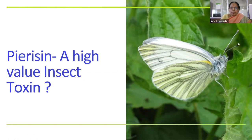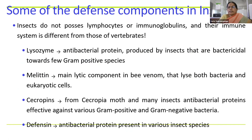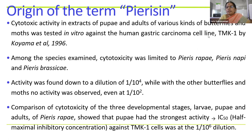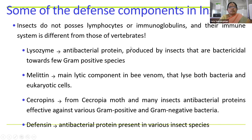It is obtained from the white cabbage butterfly. Not only this toxin, there are other insect toxins also available. There are other toxins obtained from insects and other organisms: lysozyme, melatonin, sarcopene, and defensin. These are some of the toxins obtained from other organisms.